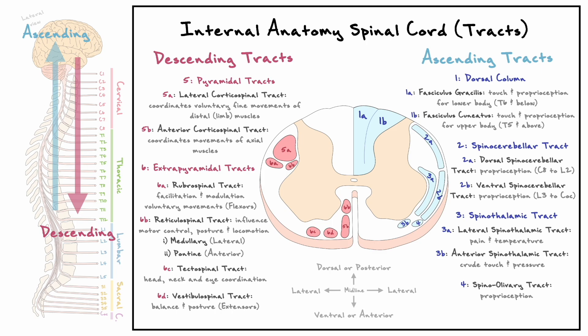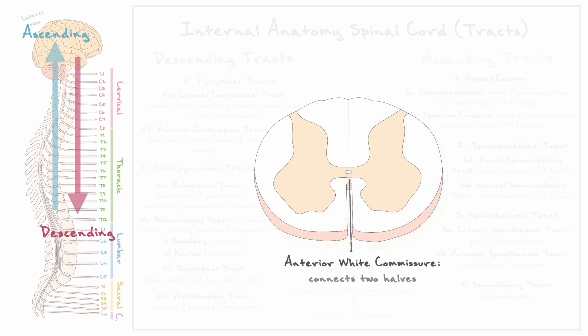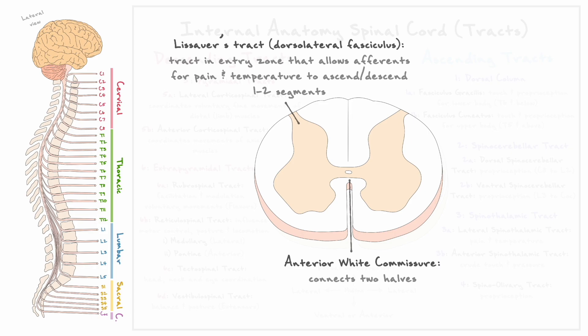The last two white matter pathways to point out are the anterior white commissure, which, like the gray commissure, connects the two halves of the spinal cord allowing information to cross over; and Lissauer's tract, known as the dorsolateral fasciculus. Before sensory afferents for pain and temperature enter the spinal cord through the spinal nerve, Lissauer's tract allows these afferents to ascend or descend one to two vertebral segments — for example, information from spinal nerve T6 could enter at segments T4 or T8.